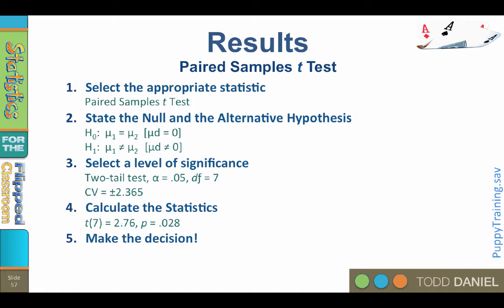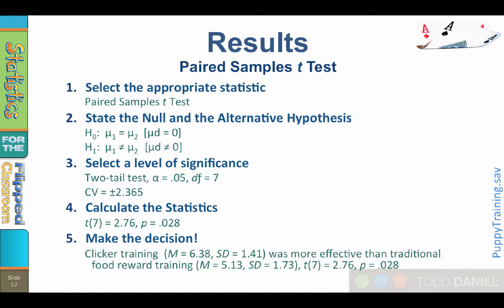Finally, step 5. Make the decision. Clicker training was more effective than traditional food reward training. T with 7 degrees of freedom equals 2.76. P equals 0.028.